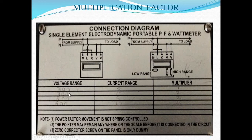If the voltage range selected is 600 and current range is 5 ampere, then the multiplication factor equals 600 into 5 into 1, divided by 1500, which is 2. And if the voltage range is 600 and current range is 10, then the multiplication factor is 600 into 10 into 1, divided by 1500, which equals 4.